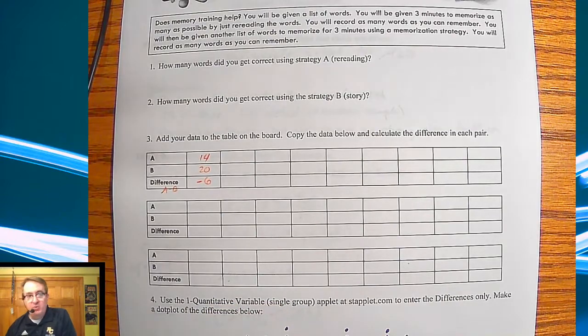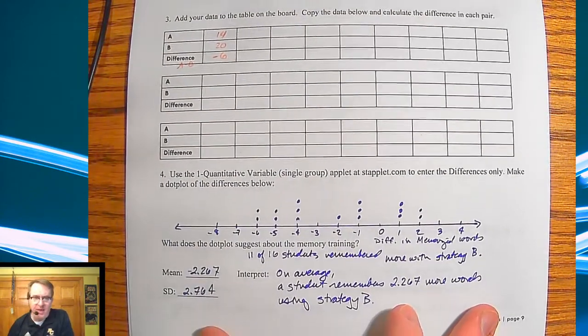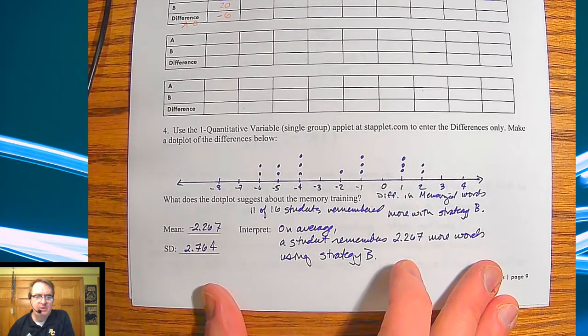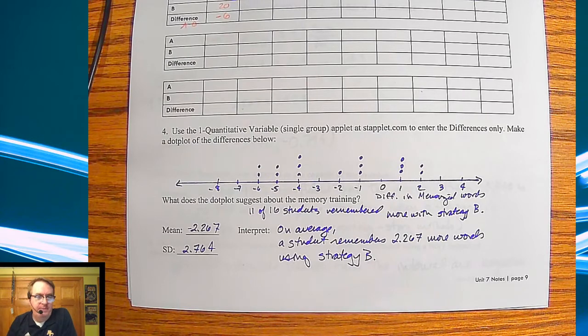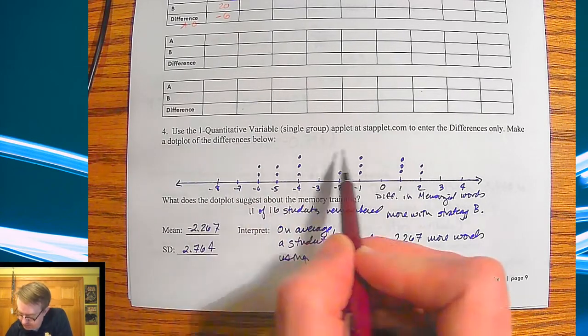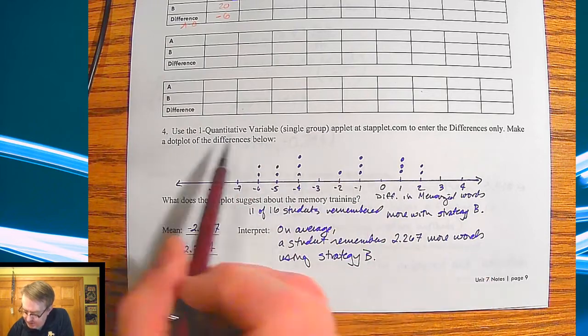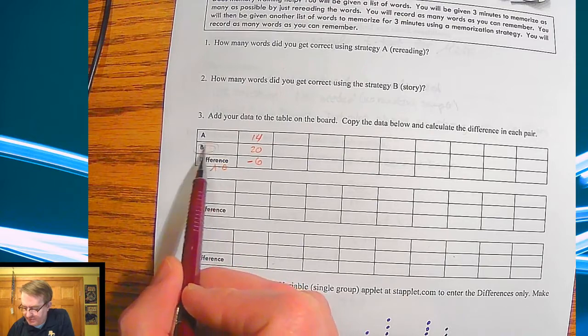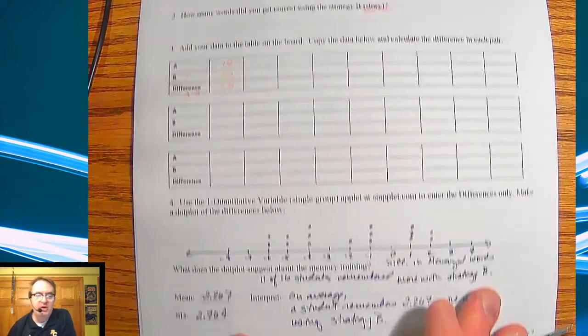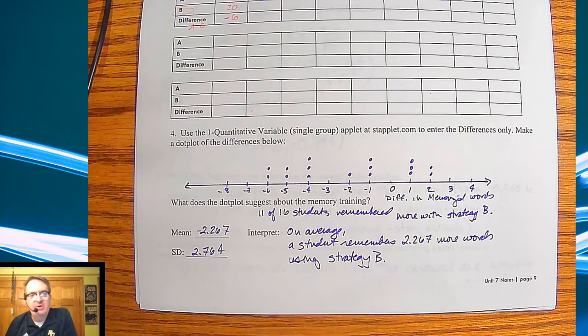Okay. All the data here is collected. We ended up having 16 students do this last year when I did it. And that is the dot plot from the differences that we ended up getting. And as you can see, it looks relatively nice. A lot of data down here in the negatives, which would imply that since this is A minus B, that B, the storytelling, was working better. But we still had some people who actually just straight memorization, rereading it over and over again was helpful.